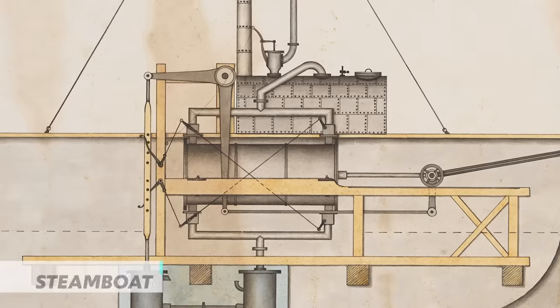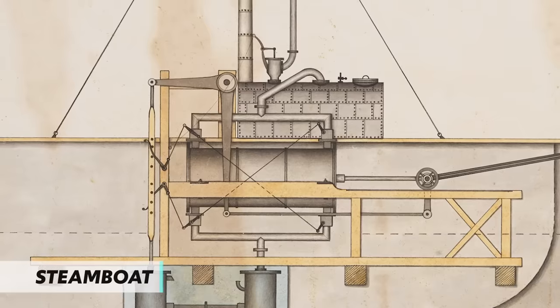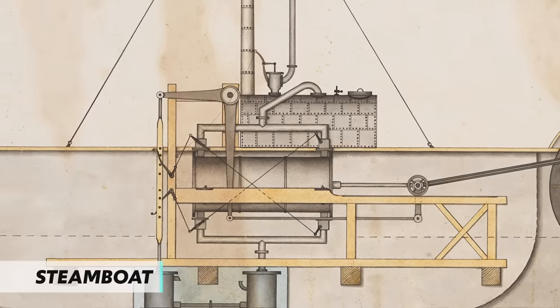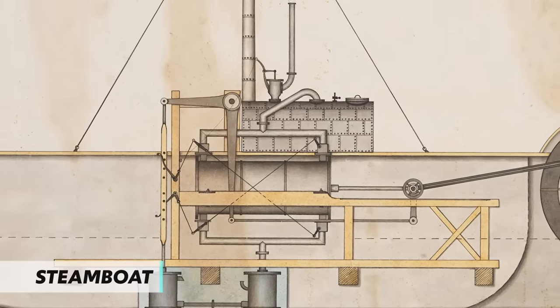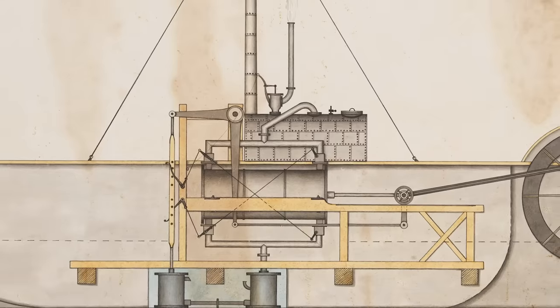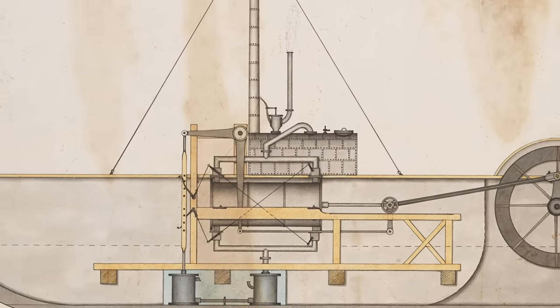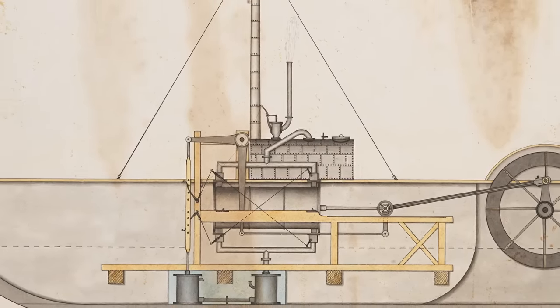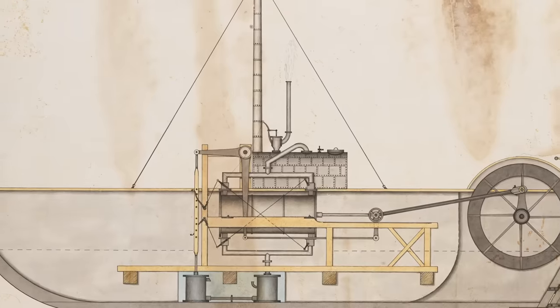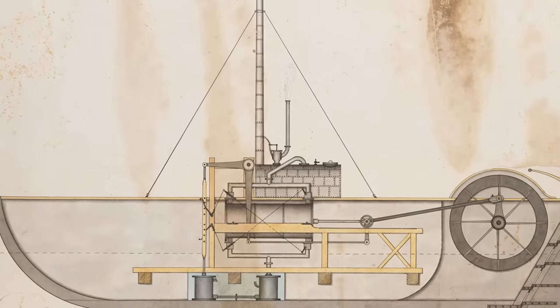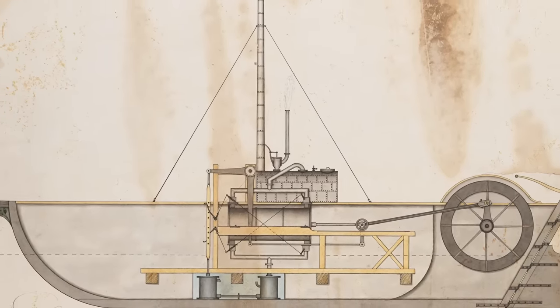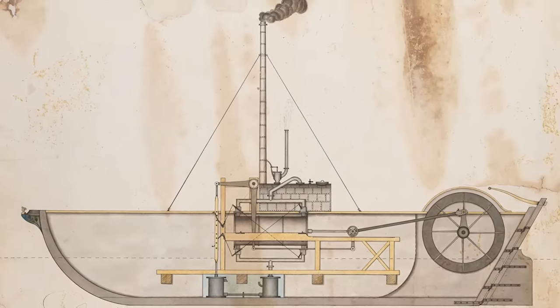If you're going to be shipping goods and raw materials on water, then you need a reliable vehicle. Enter the steamboat. Previously, if you wanted to ship manufactured goods down a river, then it was basically a one-way trip dictated by the direction of the current. But with the advent of steam power in boats, goods could be delivered downstream, then raw materials could be loaded on it, and it could power its way right back upstream. This increased the efficiency of trade immensely.